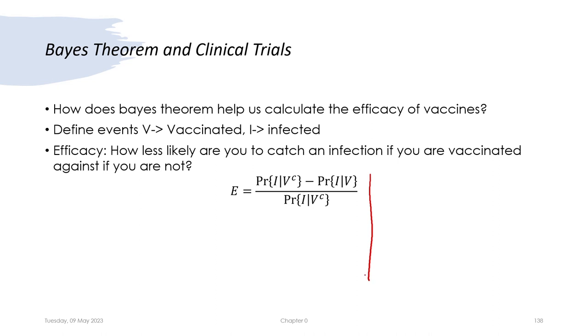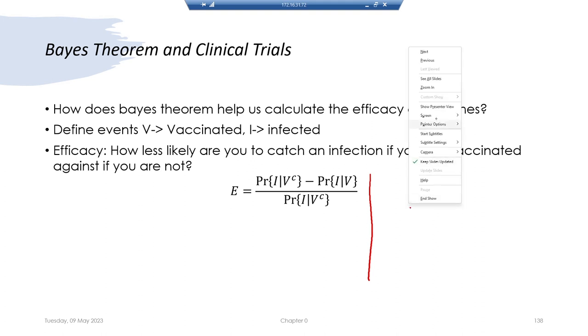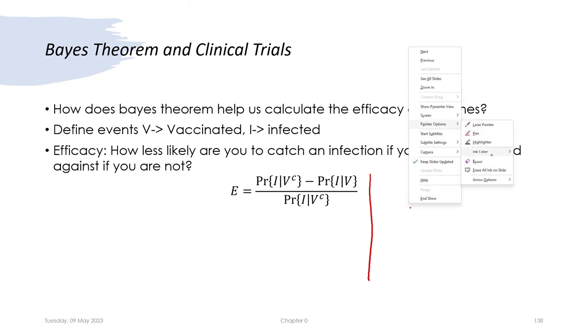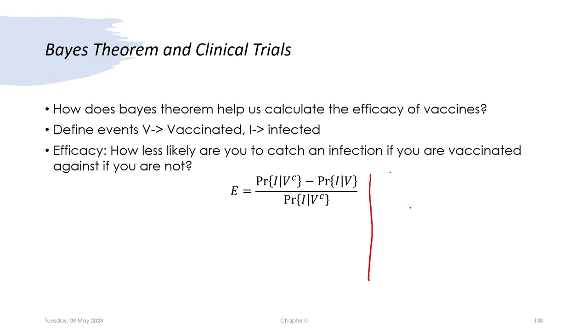We said we will talk about the efficacy of vaccines and how to calculate them. For that, I will use the Wikipedia definition of vaccine efficacy. Wikipedia says that vaccine efficacy is: unvaccinated infection rate minus vaccinated infection rate, divided by unvaccinated infection rate, multiplied by 100 percent. This is how you measure vaccine efficacy in percent.